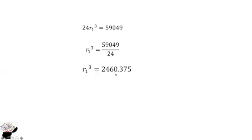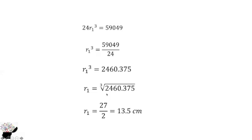So r1³ = 2460.375. Taking the cube root of both sides gives r1 = 27/2, which is equal to 13.5. So the radius of the bigger circle is 13.5 centimeters. I hope you got it correct — thank you for watching!